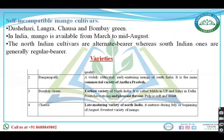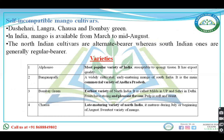Self-incompatible mango varieties include Daseri, Langra, Chausa, and Bombay Green. Generally in India, mango is available from March to mid-August. North Indian cultivars are alternate bearers, whereas South Indian varieties are generally regular bearers.